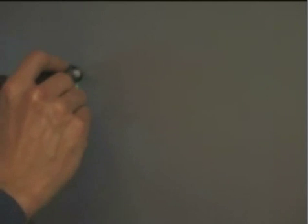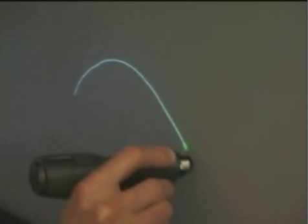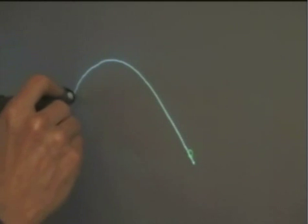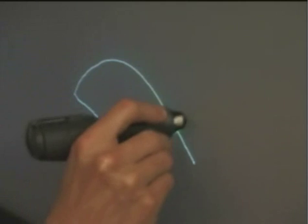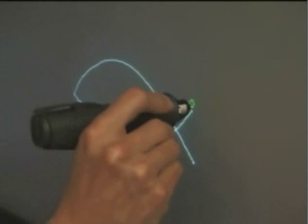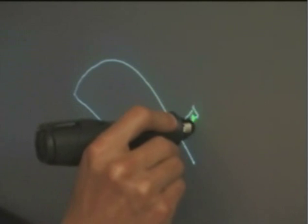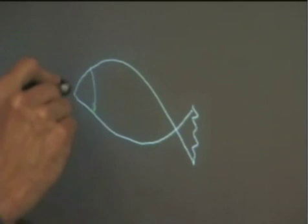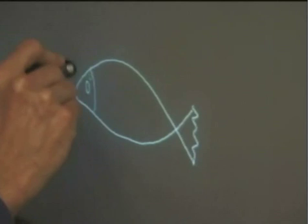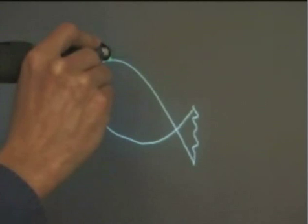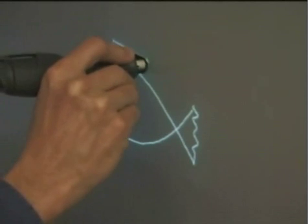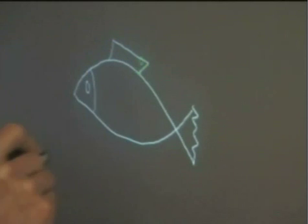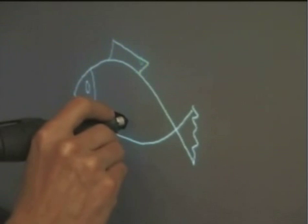The Interactive Mural cursor reflects the state of the e-beam wireless pen. When the pen touches the screen, the green cursor changes from hollow to solid. The cursor changes to blue when we press a button to call up the root menu.